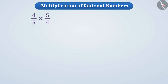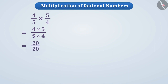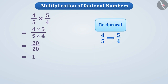Now, think if we have to find the product of four by five into five by four. How will we do it? Here also, we will multiply the numerators and denominators separately. Four into five is equal to twenty, and five into four is also twenty. In this way, the final result will be twenty by twenty, that is, one. Similarly, if the result of multiplication of any two rational numbers is one, then they are reciprocals of each other.